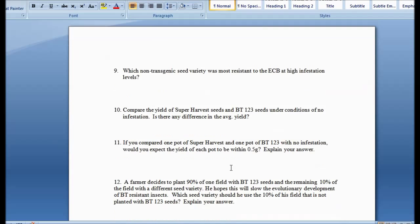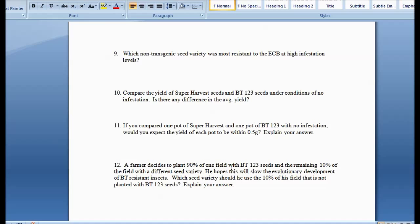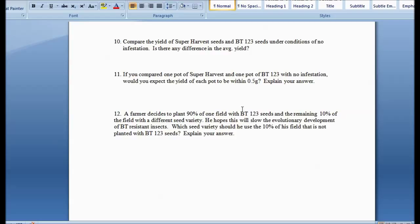So they ask you a few more questions. And then a farmer decides to plant 90% of one field with a BT and then the remaining 10% he wants to plant with a different seed variety. He hopes that this will slow down the evolutionary development of BT resistant insects, which is something we run into. The insects become resistant to it. So to slow that down, he's going to need to use either Golden or Super Harvest. Look at your data and figure out which one you get a better yield from because you're a farmer and you want better yield. Alright. And explain that. You're done.